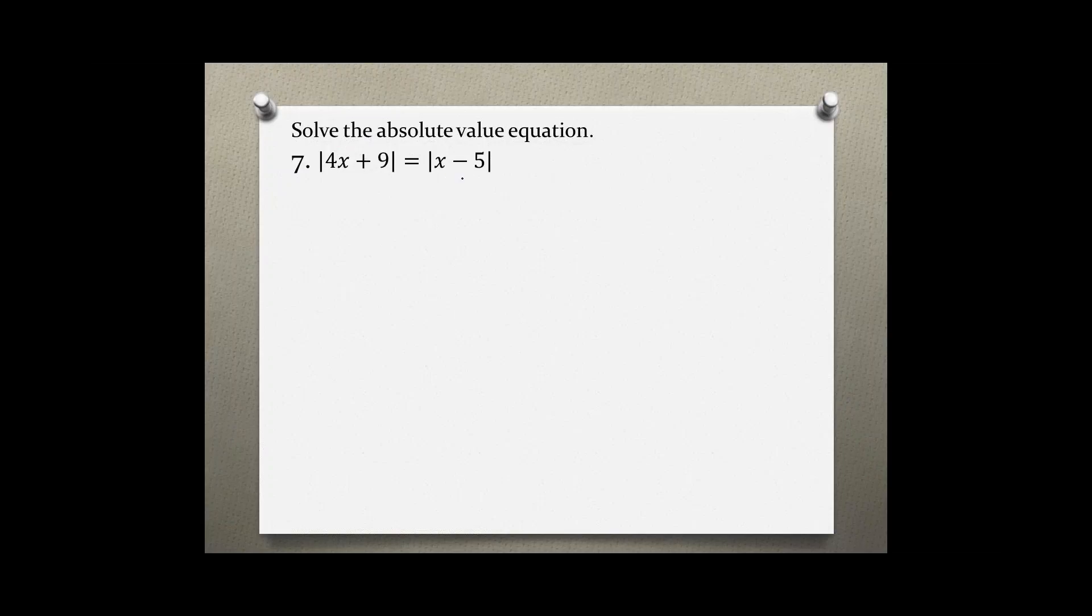In this absolute value equation, both of the absolute values are isolated, so we have to rewrite the problem with the positive version and the negative version. It doesn't matter which side you choose to make this switch. I'm going to keep the first side alone and then I'm going to choose the second one to first use the positive version, and then rewrite it using the negative version of this problem.